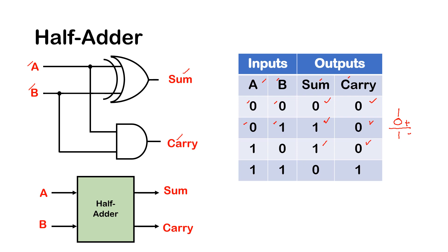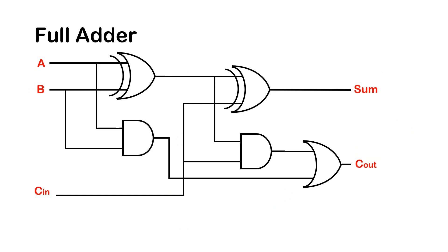For the last combination, A is 1 and B is 1. As you recall from a previous video, the sum would be 0 and this time we have a 1 as a carry, so carry is 1. That's the operation of a half adder.